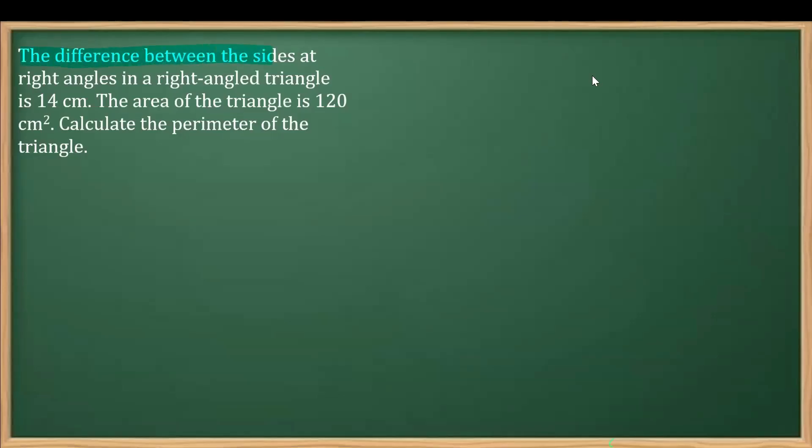The question says the difference between the sides at right angles in a right angle triangle is 14 centimeter. Let's make the figure for you to understand this better. Let's say if I make a right angle triangle over here.